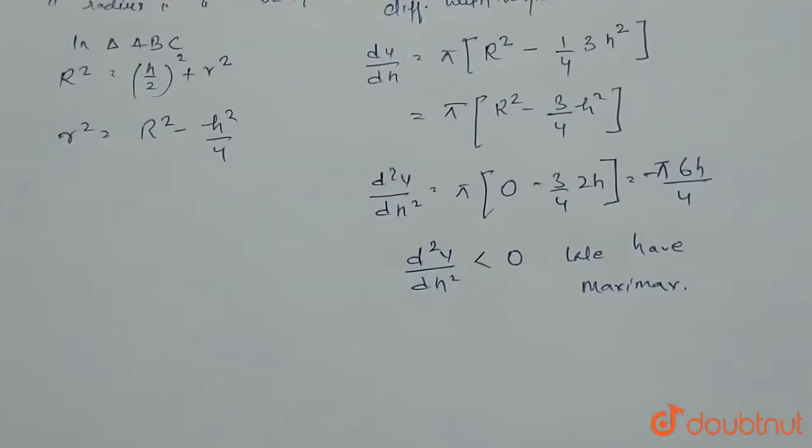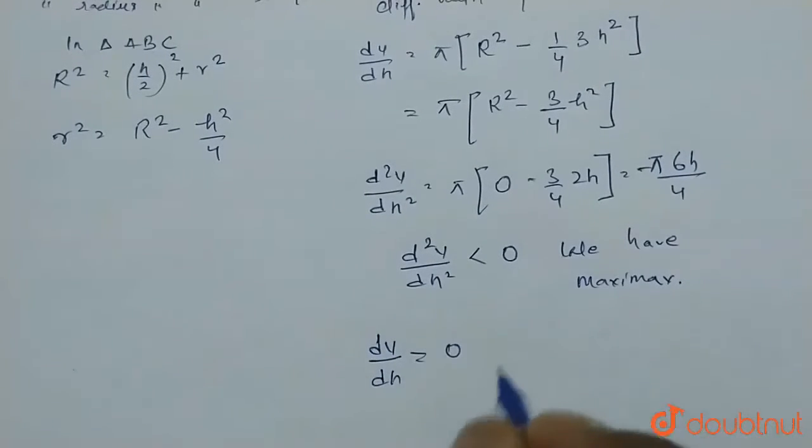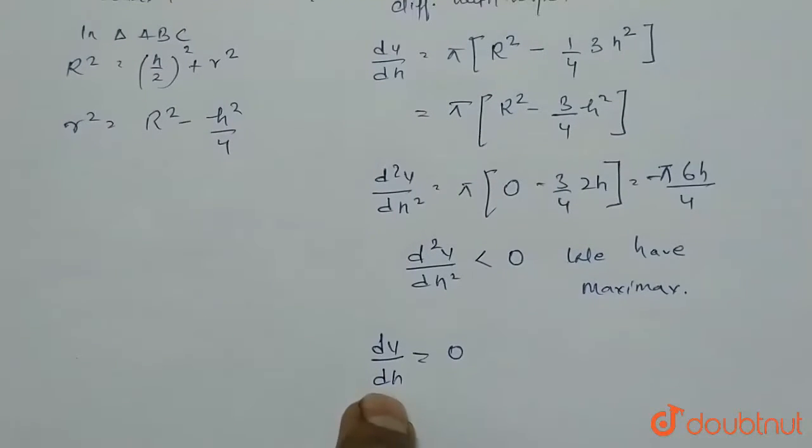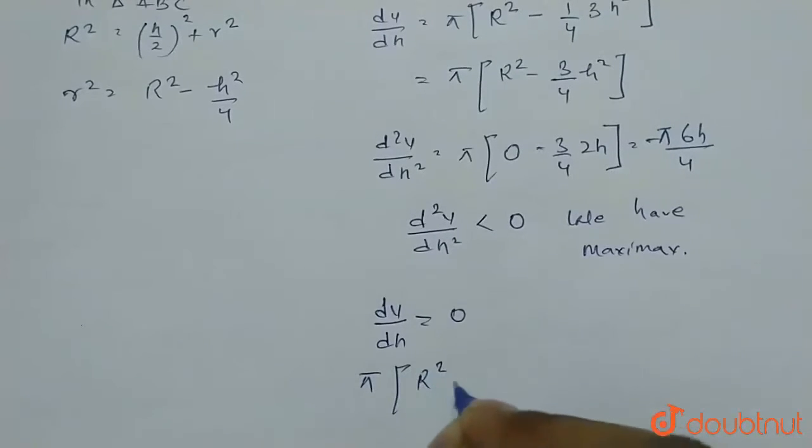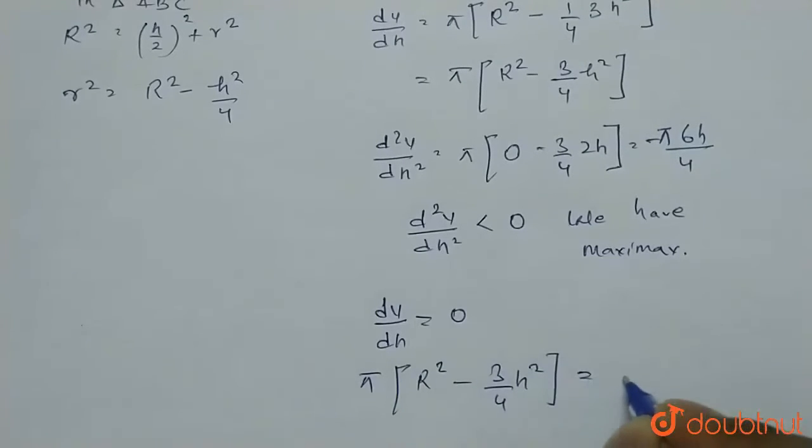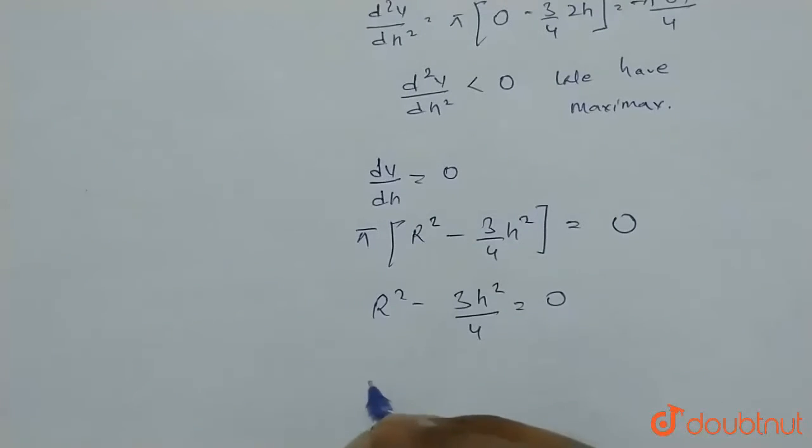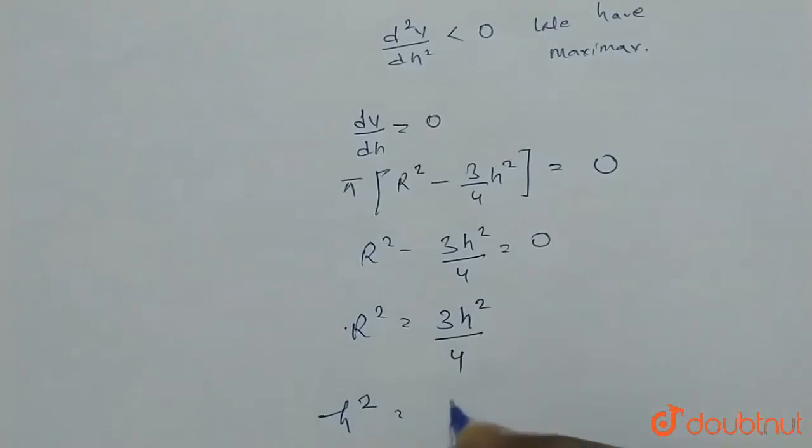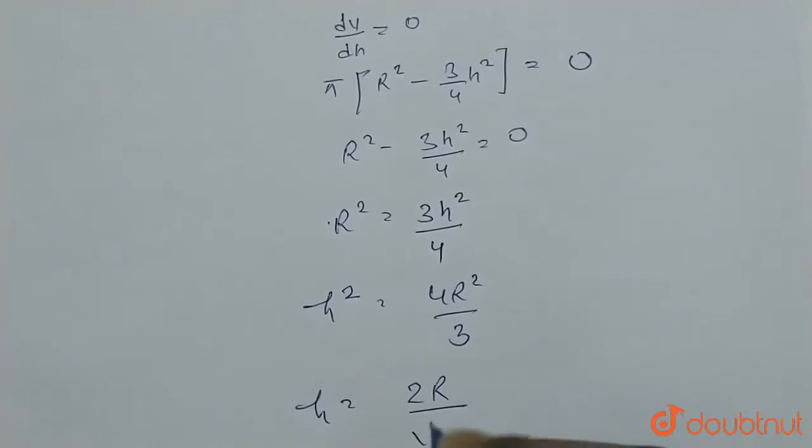So at which height will it be maximum? We will find it. Put dV/dh = 0. When we put dV/dh = 0, it gives the height at which the volume will be maximum. So π(R² - 3h²/4) = 0. From here you can say that R² - 3h²/4 = 0. R² = 3h²/4. Or h² = 4R²/3. Or h = 2R/√3.